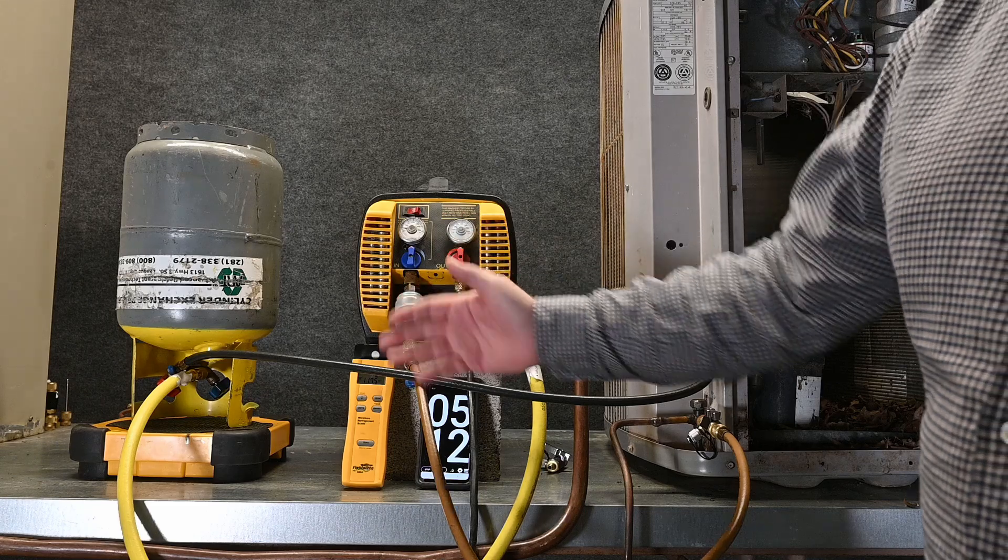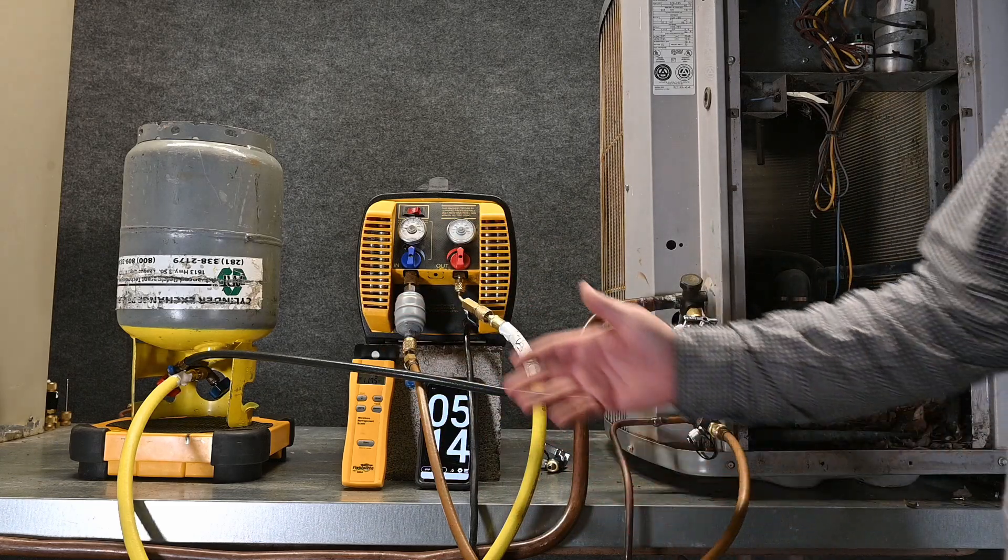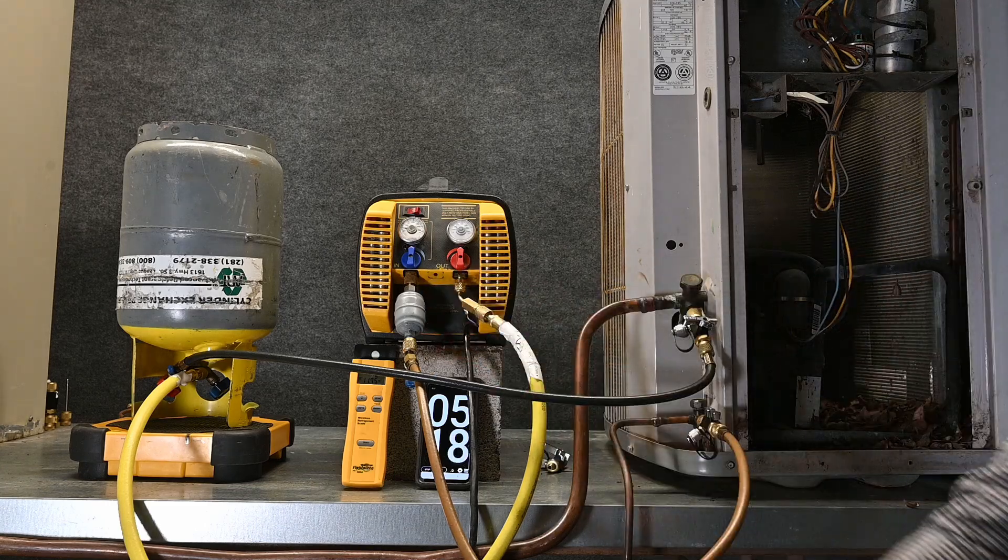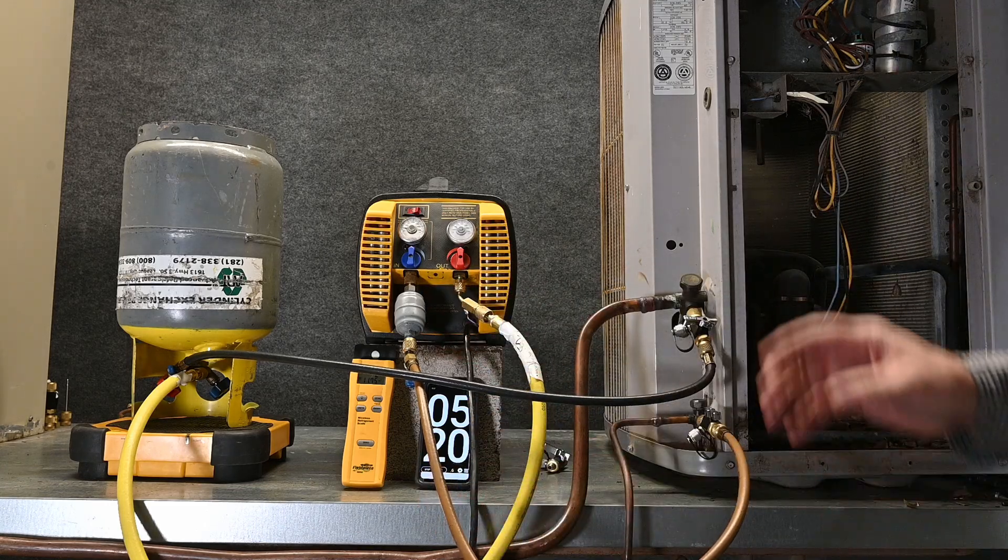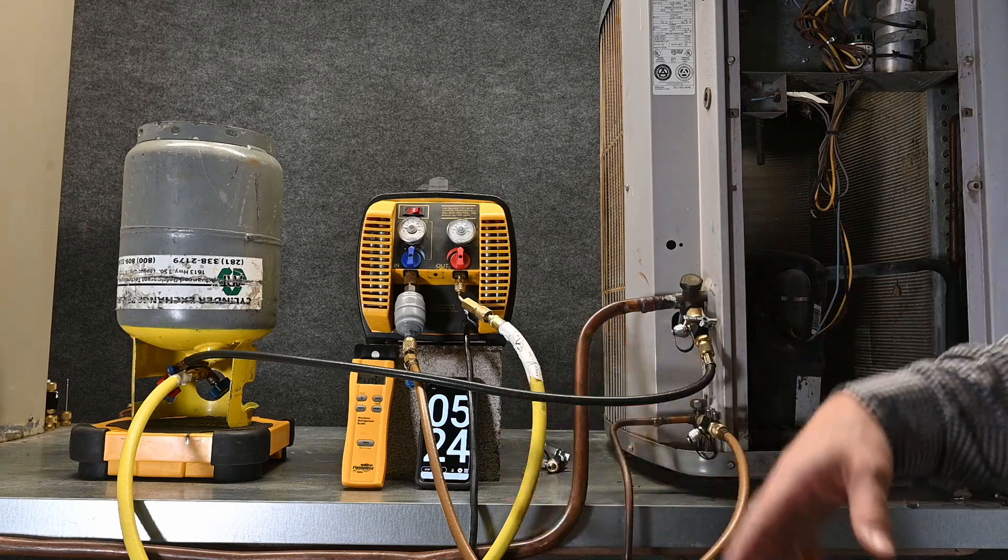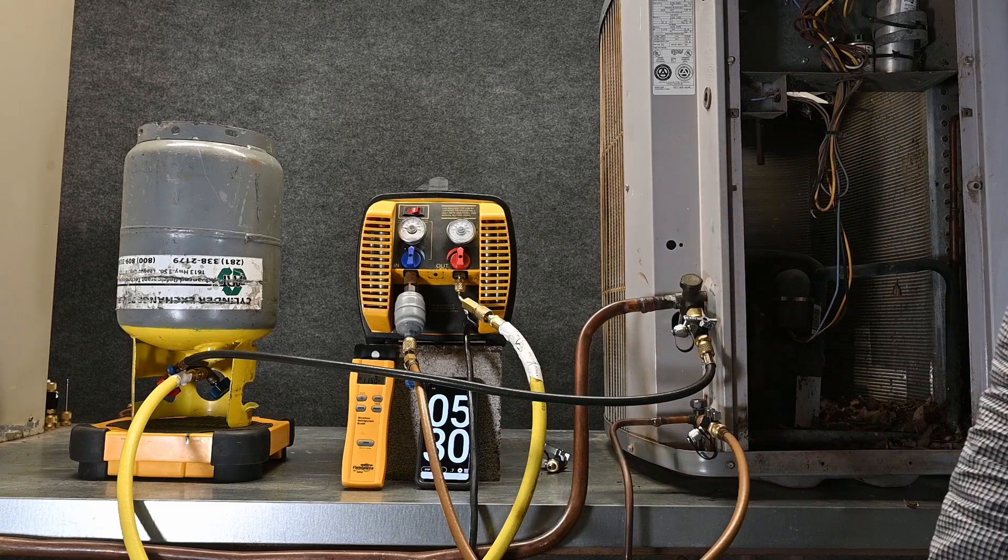The problem is we're only pulling vapor from one side, so then you would have to reattach your gauges so you'll be pulling vapor from both of these hoses. A larger hose would be applicable, but this is just an example and it would not be applicable for residential. This would be for a larger commercial system. But let's look at one more option.